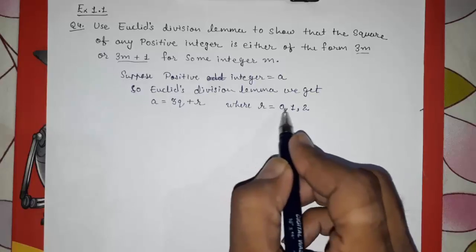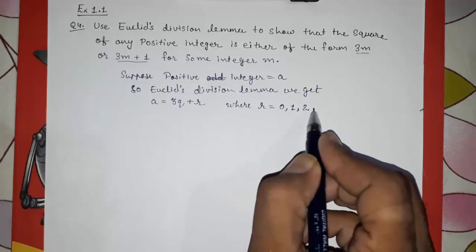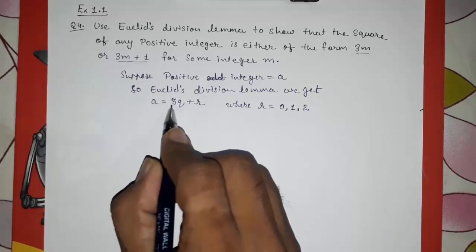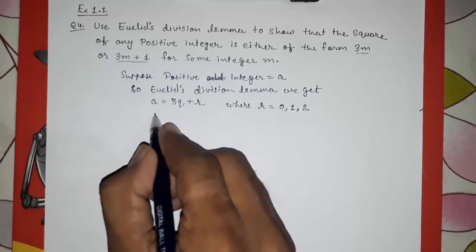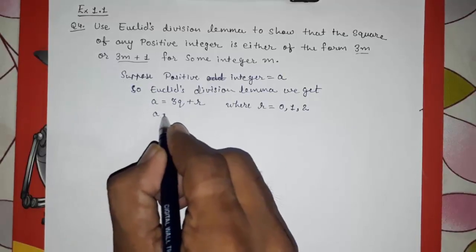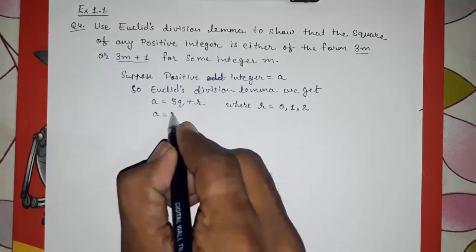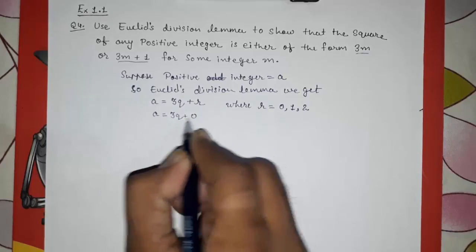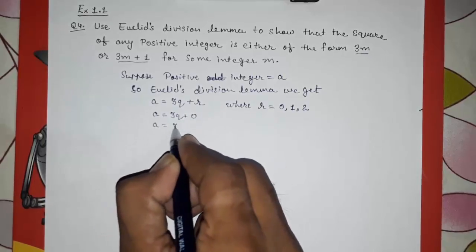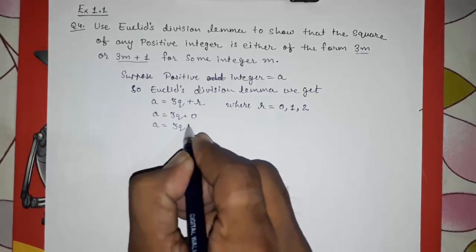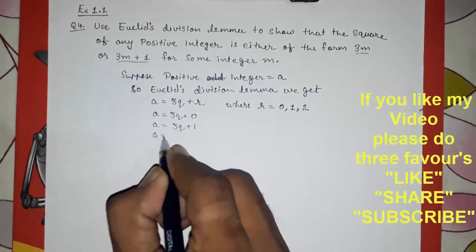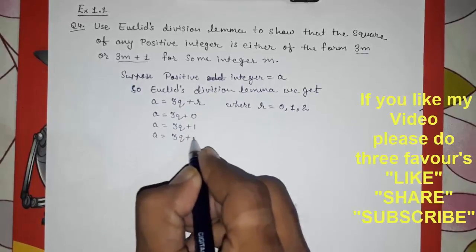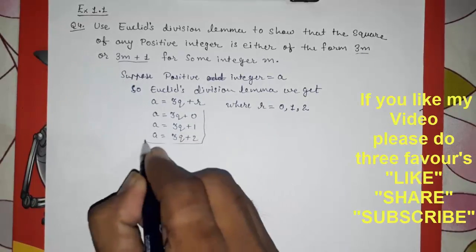r can be equal to 0, 1, and 2 — because r must be greater than or equal to 0 and less than 3. So the possible values of a are: a = 3q, or a = 3q + 1, or a = 3q + 2.